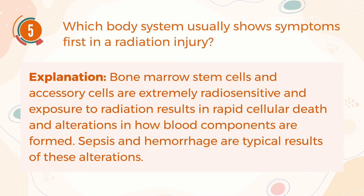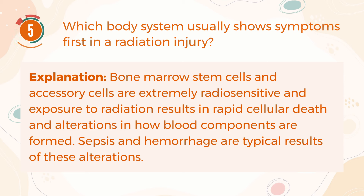Bone marrow stem cells and accessory cells are extremely radiosensitive, and exposure to radiation results in rapid cellular death and alterations in how blood components are formed. Sepsis and hemorrhage are typical results of these alterations.